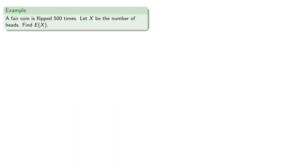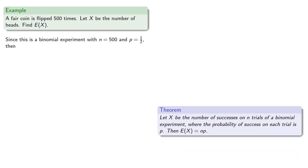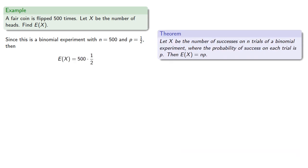So for example, let's say we flip a fair coin 500 times, let X be the number of heads, find the expected value of X. And so since this is a binomial experiment with 500 trials and probability of success in each trial one-half, then our theorem says the expected value is np, and so our expected value of X is 250.